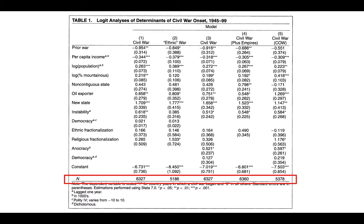This final example is from a table we'll read about the role of ethnic conflict in civil war. Here again you can see the dependent variable, civil war onset, in the title of the table, and the independent variables listed in the first column. I wanted to show you this version because it has a couple of things that are different. First, it talks about logit analysis instead of just regression analysis. Logit is a specific type of regression that's interpreted differently than linear regression, but since we're just looking at the sign and significance of results, we don't need to worry too much about the details of interpretation.